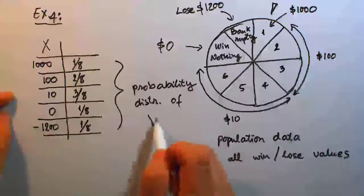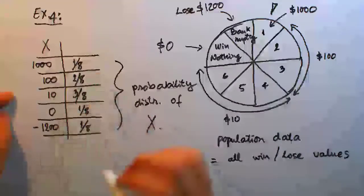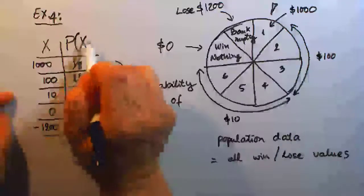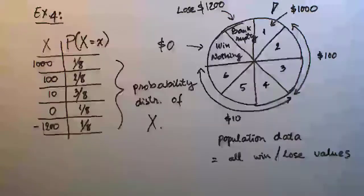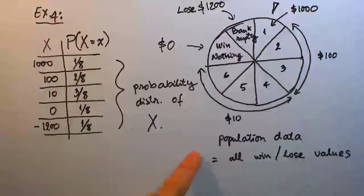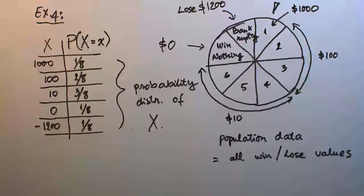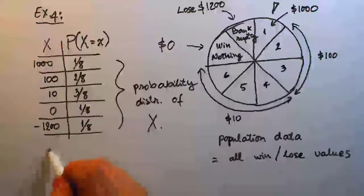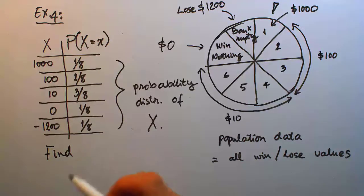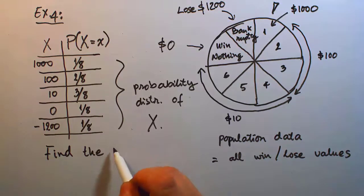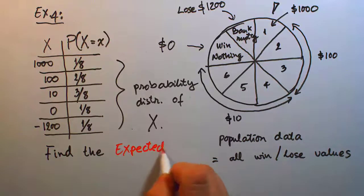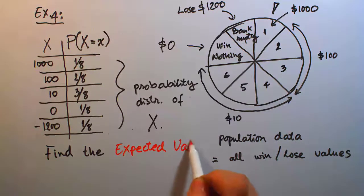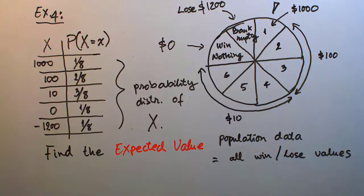This is the probability distribution of the random variable X defined previously. The right-hand column lists the different probabilities where X equals the different values shown in the left-hand column. After seeing clearly how the random variable and population data exist in this example, the next question is: find the expected value — a new terminology that deserves its own attention — find the expected value of each game.